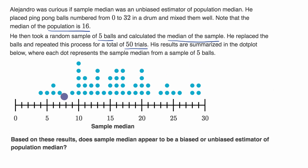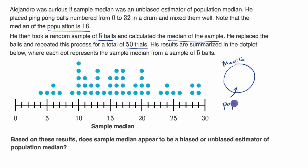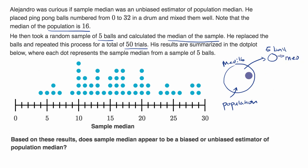This right over here is a sampling distribution of the sample median. You have a population of balls — we know a parameter, we know that the median of the population is 16. This right over here is the population. He keeps taking samples of five balls, and then he calculates the statistic — the median of the sample.